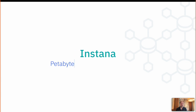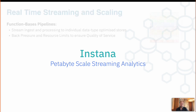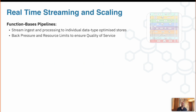Instana actually means instant analytics, and it was designed at its core to be a petabyte-scale streaming analytics platform. So how is that actually built? First of all, we have function-based pipelines. We collect different types of telemetry: metrics, logs, traces, events, performance profiles, end user monitoring, and synthetic test results. For each of these we have an individual pipeline that is optimized to the type of data that we're collecting and the analytics that we have to do on top of it.